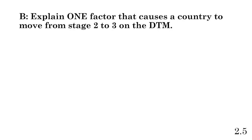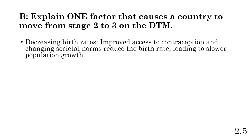Part B: explain one factor that caused a country to move from Stage 2 to Stage 3 of the demographic transition model. What causes countries to go from Stage 2 to Stage 3? We see decreasing birth rates, improved access to contraception, and changing social norms and culture that inevitably reduce the birth rate. Stage 3 shows that initial steep birth rate decline — it may have declined a little in Stage 2, but in Stage 3 it declines exponentially, leading to slower population growth.